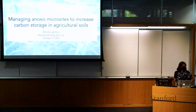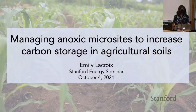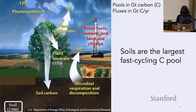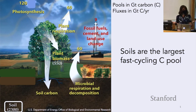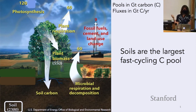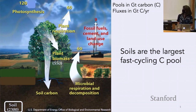Hi, I'm Emily LaCroix. Thanks for being here — I'm really excited to talk about my work studying soils as a form of soil carbon storage. Soils are actually the largest fast-cycling carbon pool. They store over 2,300 gigatons of carbon, which is more carbon than all of the plants on Earth and the atmosphere combined. The size of the soil carbon pool is regulated by inputs and outputs. The main input to soil carbon is plants — they bring in carbon dioxide through photosynthesis to build their plant parts, and those plant parts eventually end up in the soil.